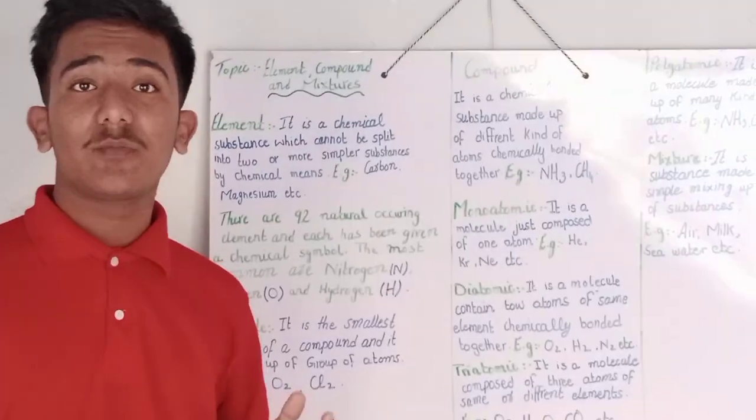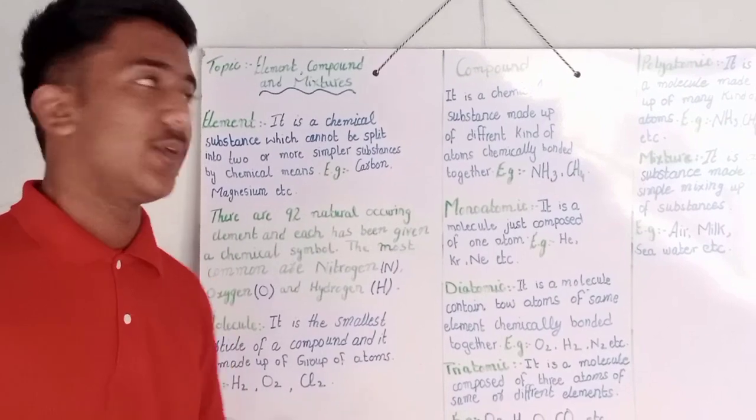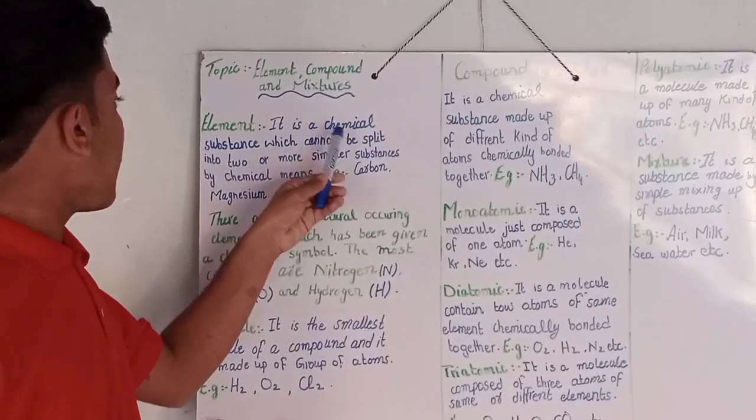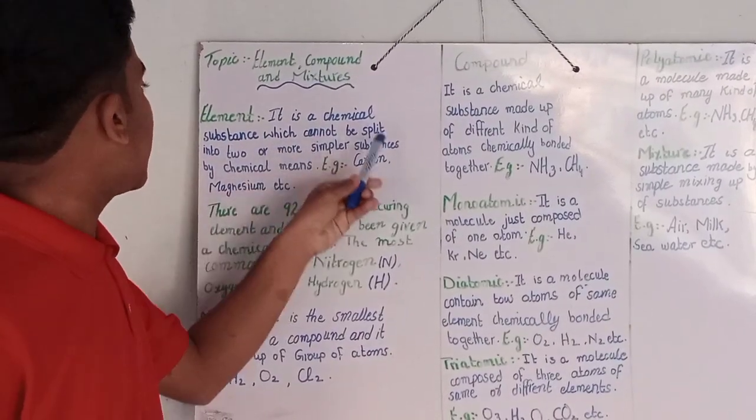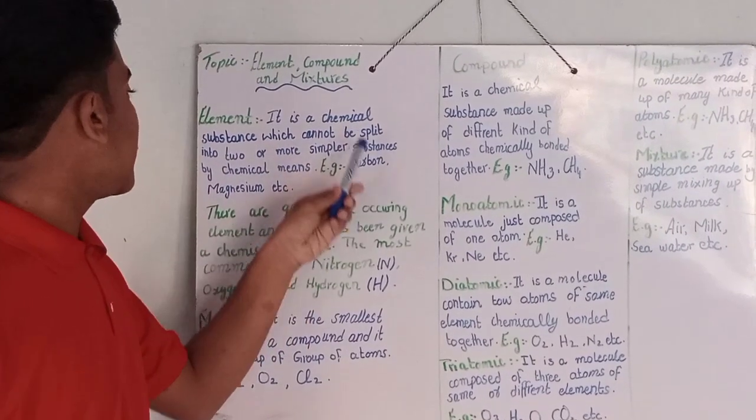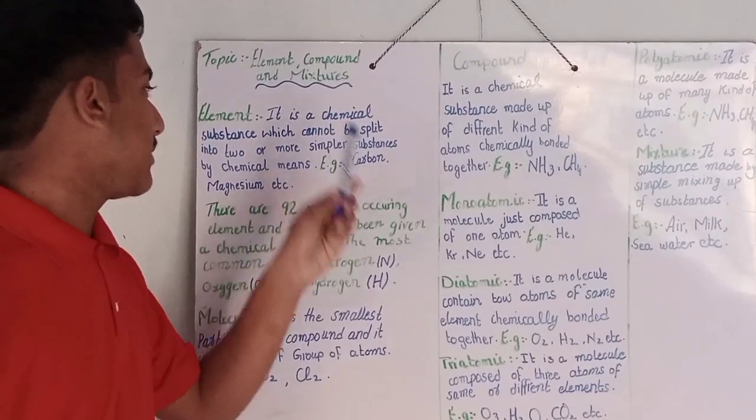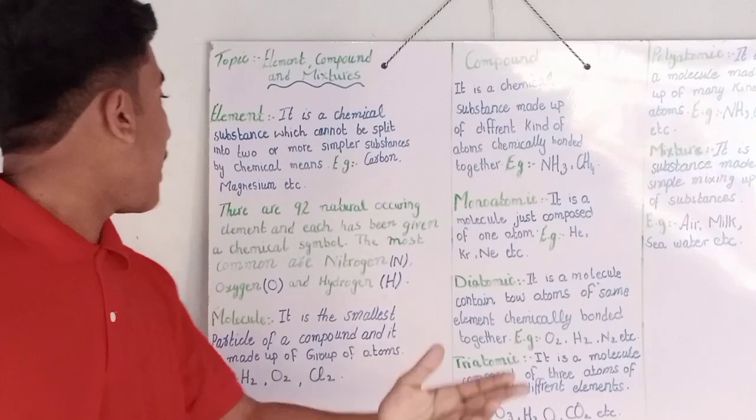So first of all, I will explain you about the definition of Element. Element, it is a chemical substance which cannot be split into two or more simpler substances by chemical use. For example, carbon emission.